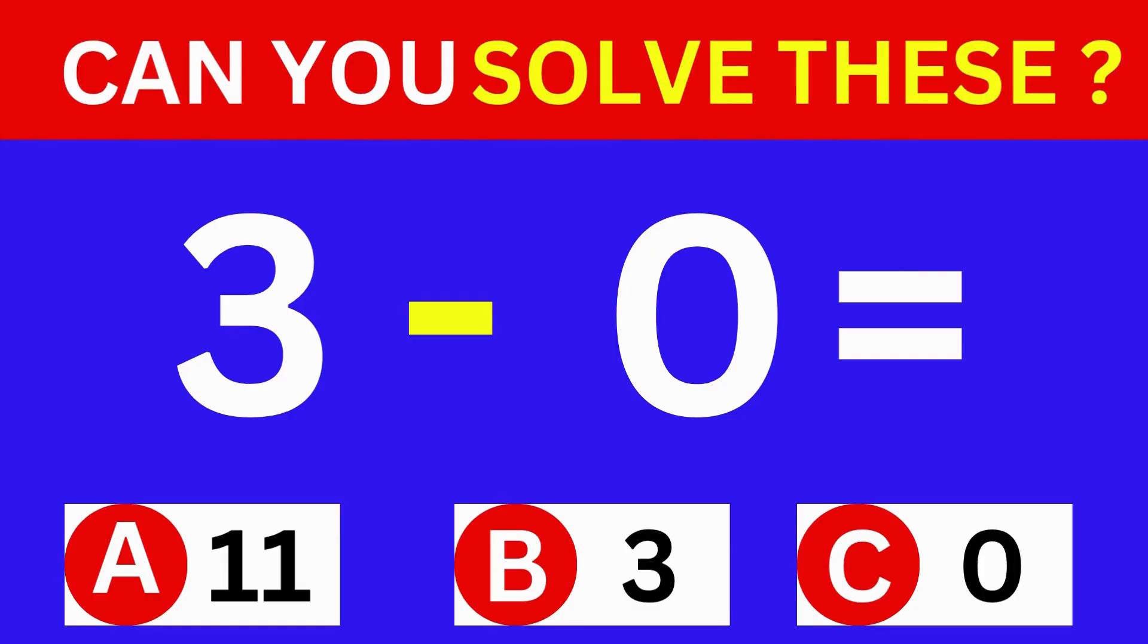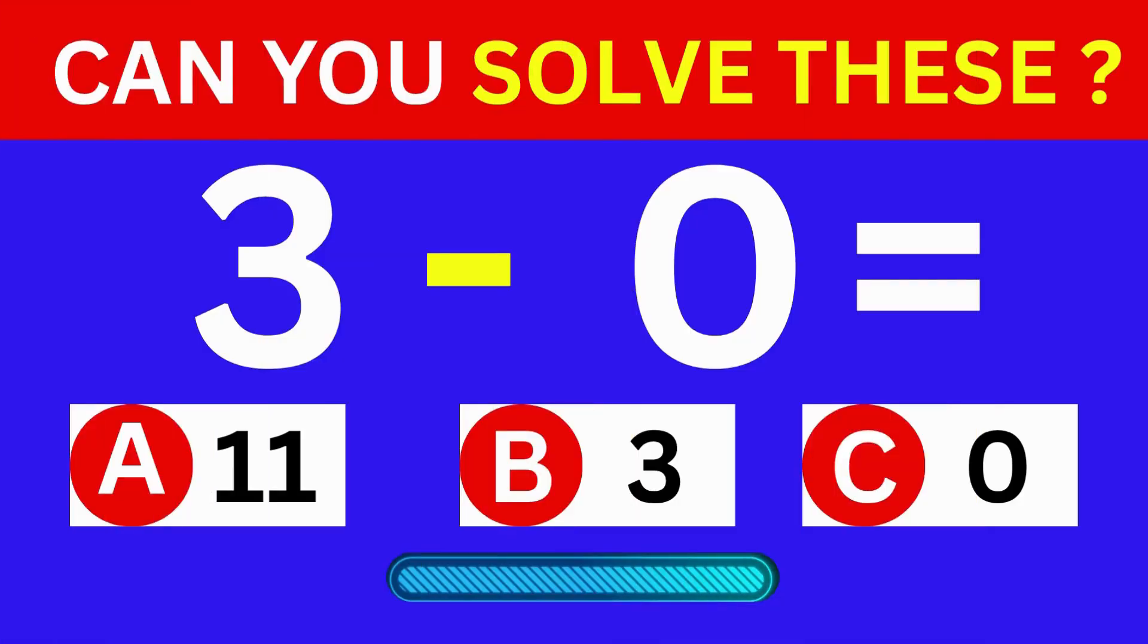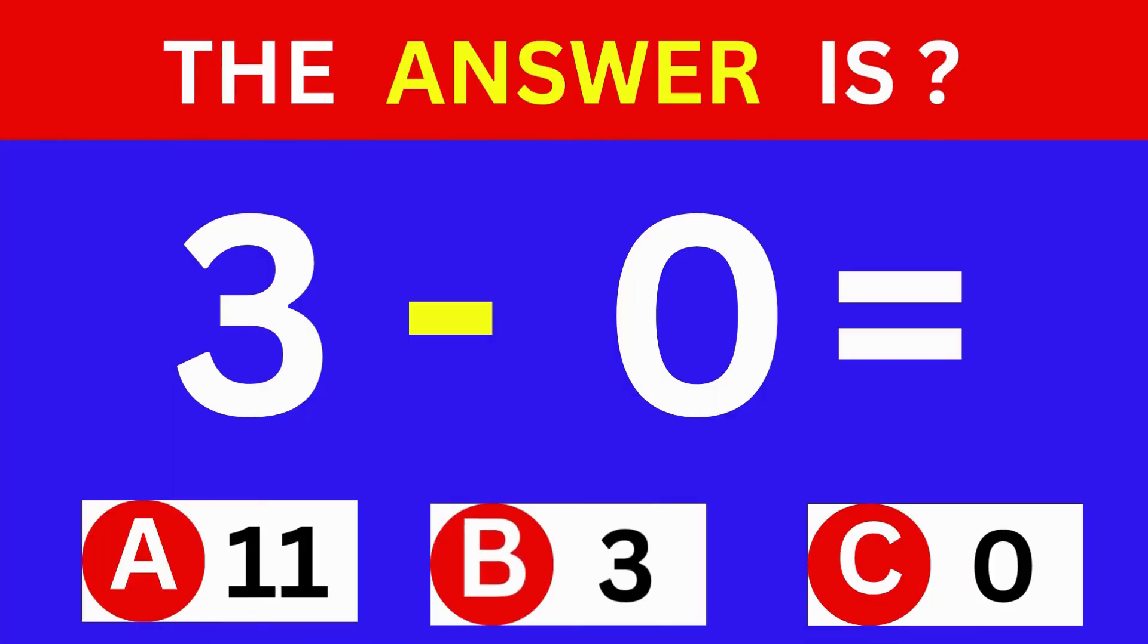3 minus 0 equals. A: 11, B: 3, C: 0. The answer is option B, 3.